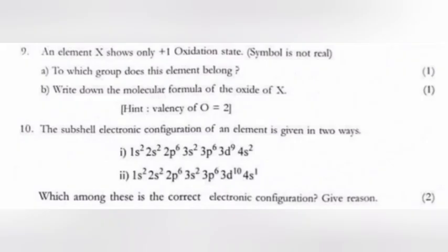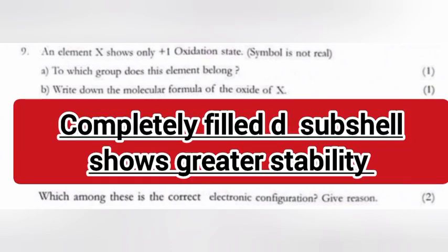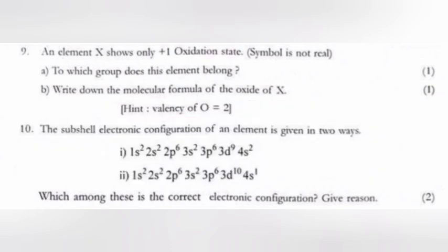Question 10: The subshell electronic configuration of an element is given in two ways. Which among these is the correct electronic configuration? Answer: 2. Completely filled d subshell shows greater stability.